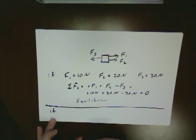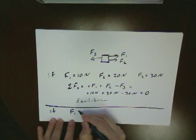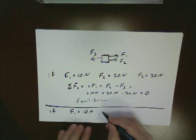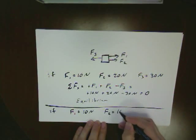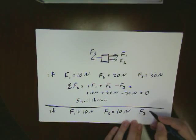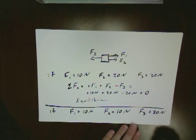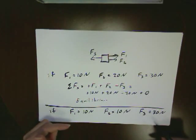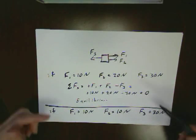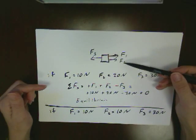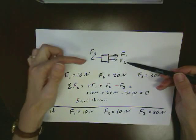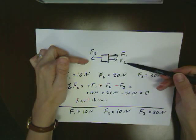However, if I had F1 equal to 10 newtons, F2 equal to 10 newtons, and F3 equal to 30 newtons, well, you should be able to see here without me having to write out the entire equation. I've got a total of 20 newtons pulling to the right, but I've got 30 newtons pulling to the left.